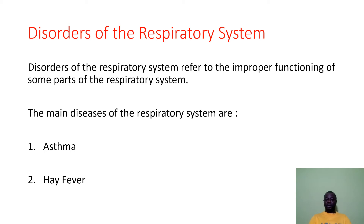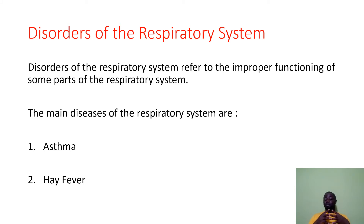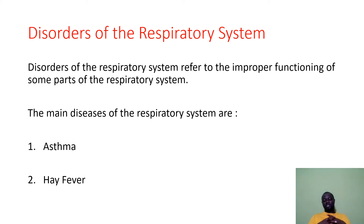Let's look at the disorders of the respiratory system. Disorders refer to the improper functioning of some parts of the respiratory system — for example, the pharynx, the lungs, the bronchi, or any part that doesn't work well. There are two main diseases that affect the respiratory system: asthma, which is very common in our part of the world, and hay fever, which most of you may not have heard about before.